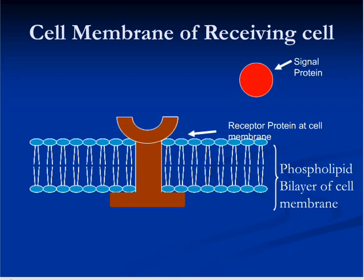While receptors are made up of proteins, signals are made up of a variety of molecules including proteins, fatty acids, and even gases like nitric oxide and carbon monoxide molecules. These signals do not have to enter the receiving cells, but they rather activate a number of intracellular signaling proteins, as a result of which a receiving cell changes its behavior or initiates a function.